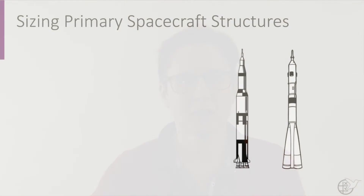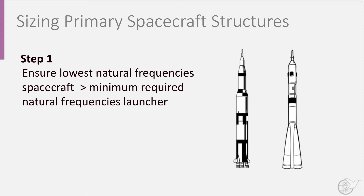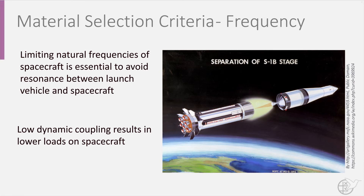To size a primary spacecraft structure, a two-step procedure must be followed. The first step is to ensure that the lowest natural frequency of the spacecraft — a satellite for instance — is larger than the minimum required natural frequency of the launcher. Limiting the natural frequency this way, in both the axial and lateral direction, is necessary to avoid resonance between the launch vehicle and the spacecraft. A second advantage is that having low dynamic coupling also results in lower loads acting on the spacecraft.